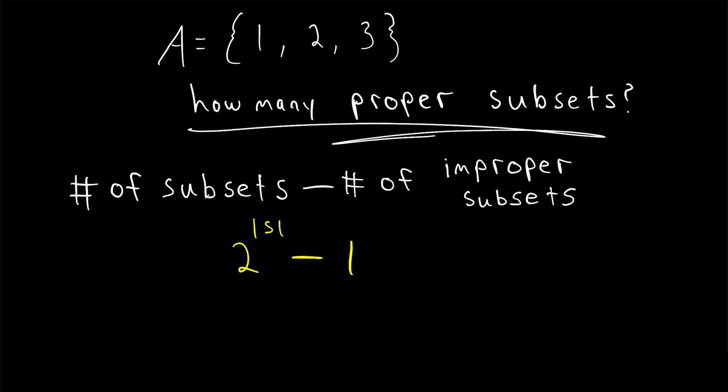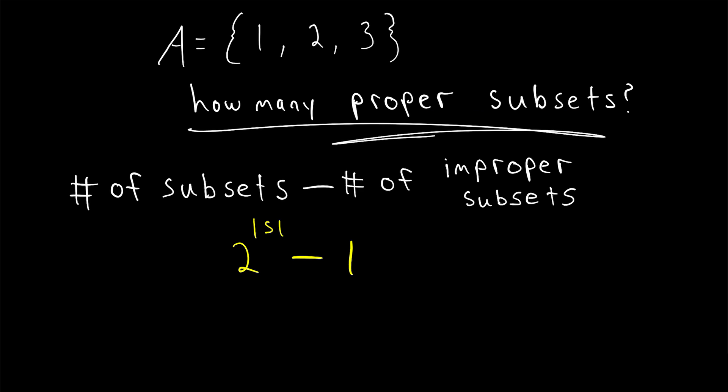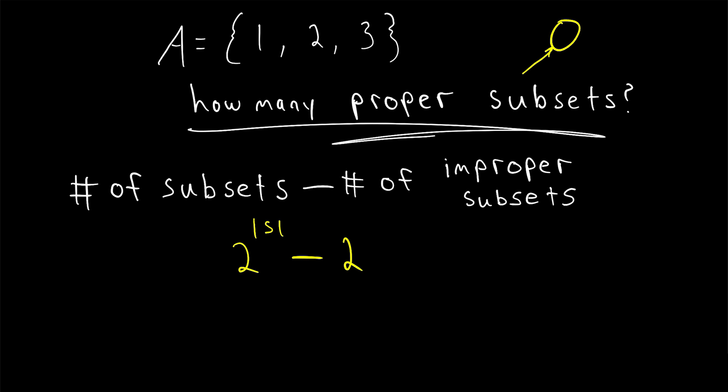It doesn't seem very common, but some people define a proper subset to be a subset that's not equal to the original set and that isn't empty. In that case, every non-empty set would have two improper subsets — the empty set and the original set itself — and we'd have to modify this formula to two to the power of the cardinality of S minus two. This would give us the number of proper subsets of a finite non-empty set. For the empty set, its only subset is itself, which is an improper subset, so the number of proper subsets the empty set has will always be zero.